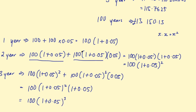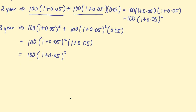Hopefully you're seeing a pattern now. After one year we had 100 times (1 + rate) to the power of 1. After two years, the initial amount times (1 + rate) squared. After three years, 100 times (1 + rate) cubed. After four years it would be to the power of 4, and so on. So we have derived the formula for compound interest.